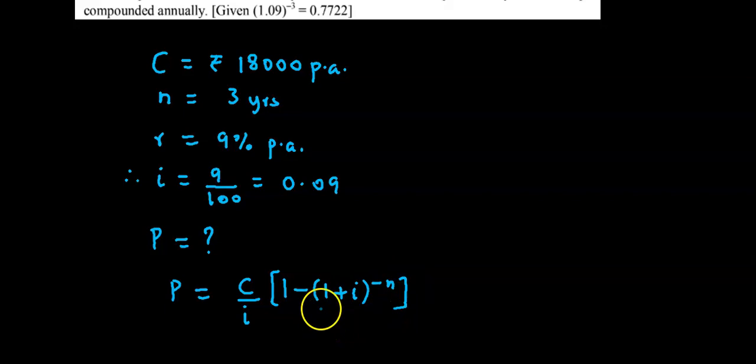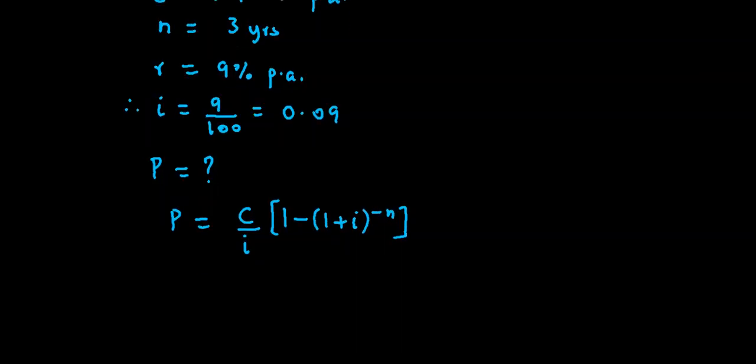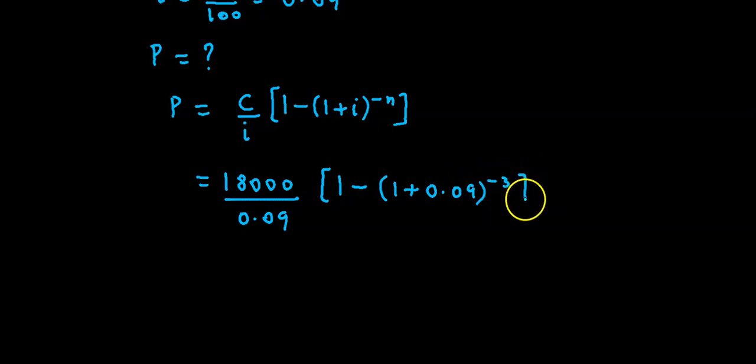Now we substitute these values. C is 18,000, i is 0.09, brackets 1 minus 1 plus i, that is 1 plus 0.09 raised to minus n, that is raised to minus 3.